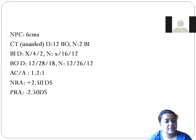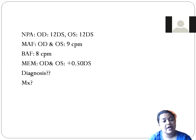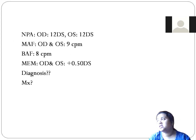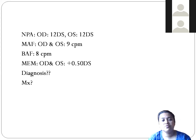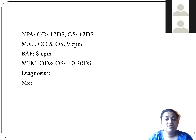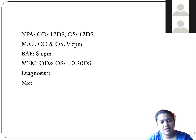For a 16-year-old, the expected amplitude of accommodation using the formula 18.5 minus (0.3 × age) gives 18.5 minus 4.8, which is approximately 13 diopters. This patient has 12 diopters of accommodation, which is quite acceptable — close to the expected value.